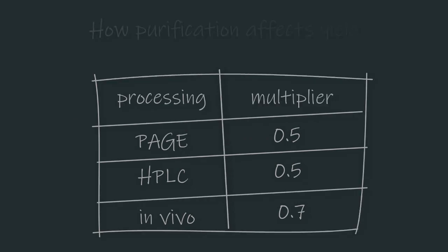Here's a table showing the multipliers we'd expect in our own labs for different processing options of single stranded RNA and DNA.